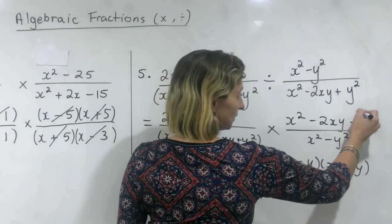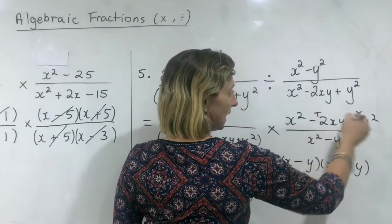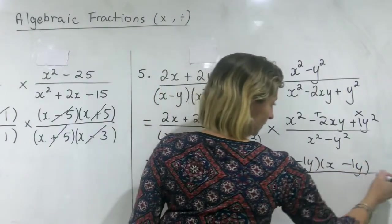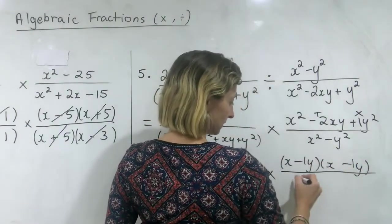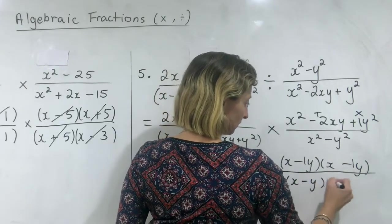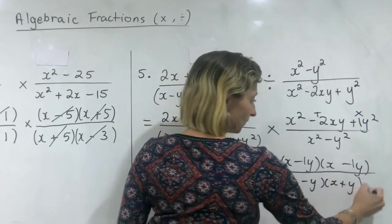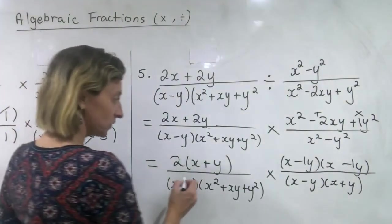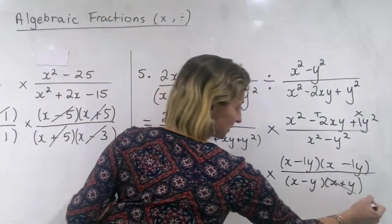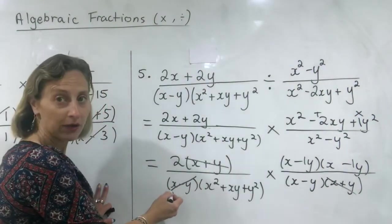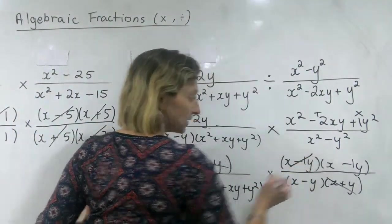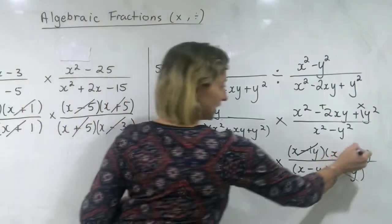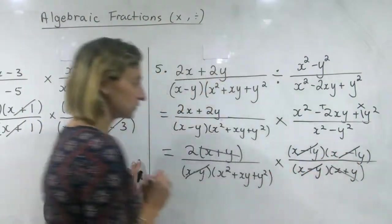Adds to give negative two and multiplies to give one: so one y, one y — minus, minus. And the bottom is the difference of two squares. Now I'm looking to cancel where I can. I have an x plus y there and an x plus y here. I have an x minus y on the bottom left and an x minus y on the top right, and another x minus y pair over there.